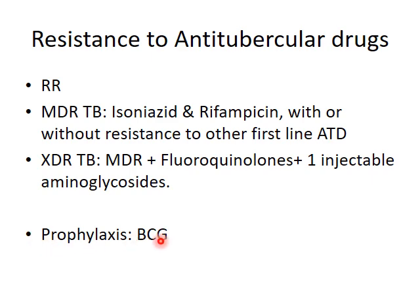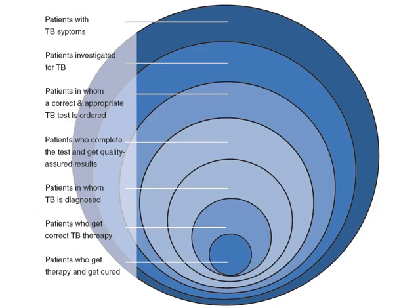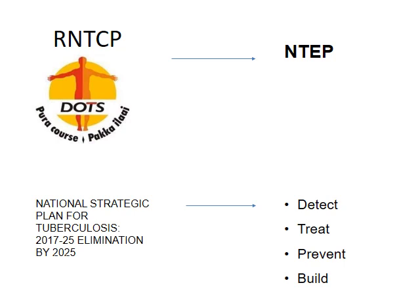For prophylaxis of tuberculosis, there is only one thing available: BCG vaccination. For extra-pulmonary tuberculosis, the diagnostic tools available are FNAC, biopsy, cytology and smear examination in case of fluid, X-ray, USG, and culture. Serology is banned for the diagnosis of tuberculosis.